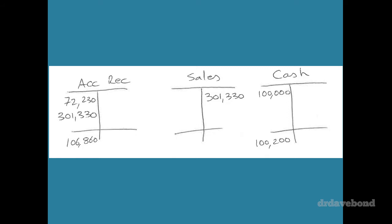72,230 accounts receivable. So if you go to the balance sheet, you'll see that number started there and accounts receivable ended at 106,860. So if you see an increase in accounts receivable, that tells you you have not collected everything. It tells you not everything that got sold today or sold this year was collected. We add in the 301,330.